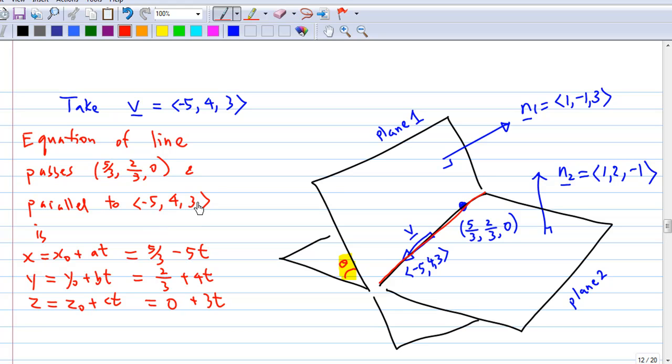So we can write the equation of the line in parametric form. x equal to x0 plus at, y equal to y0 plus bt, and z equal to z0 plus ct, where (x0, y0, z0) is the point the line passes through.